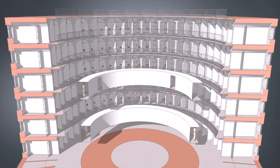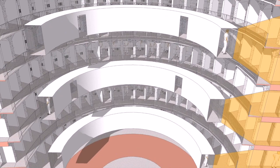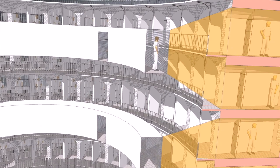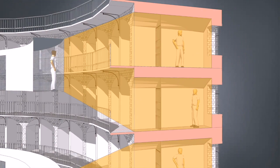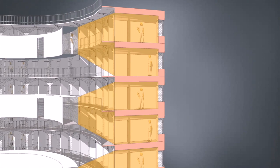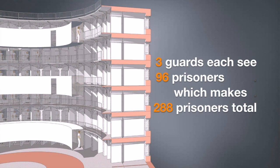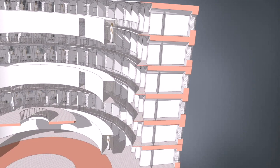At every other floor there is a surveillance corridor. This is all modeled according to Bentham's exact instructions in his text. Each of the three surveillance corridors can survey two prisoners and two tiers of cells. The guard can see the prisoners but the prisoners cannot see the guards — a one-way visibility. You watch but you do not know when you are being watched. Three guards each see 96 prisoners, making 288 prisoners total. This gives an idea of how the Panopticon functions.